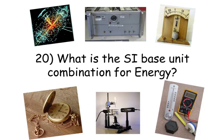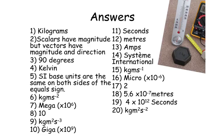Okay guys, here are your answers. Number one: kilograms. Number two: scalars have magnitude, but vectors have magnitude and direction. Number three: ninety degrees. Number four: Kelvin. Number five: SI base units are the same on both sides of the equal sign. Number six: kilogram meters per second squared. Number seven: mega. Number eight: ten. Number nine: kilogram meters squared s to the minus three.